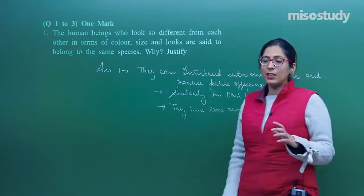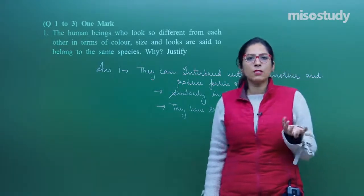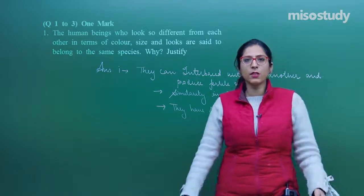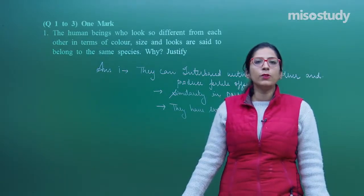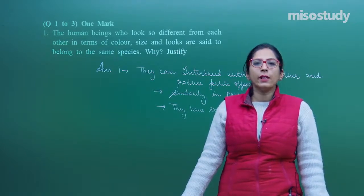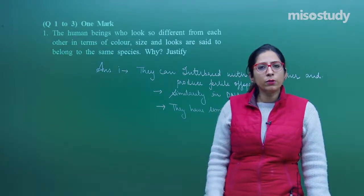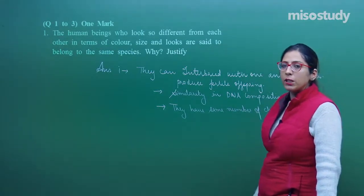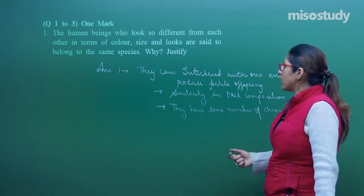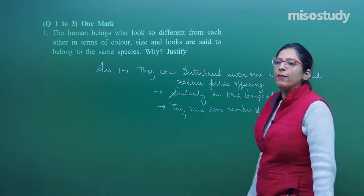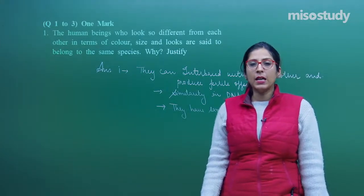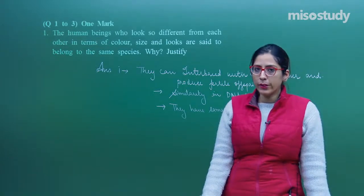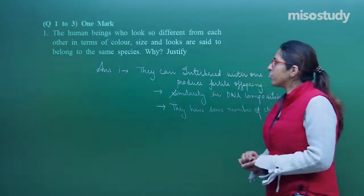They have the same number of chromosomes — that is why they are kept under the same species. When we talk about the definition of a species, species are the group of individuals who can interbreed with one another and produce fertile offspring. Regarding DNA, 99% of the base sequence matches with other individuals. As for the number of chromosomes, we have a total of 46 chromosomes, or 23 pairs. In case of the male, there are 22 autosomes and one XY chromosome, and in case of females, 22 autosomes and a pair of X chromosomes.